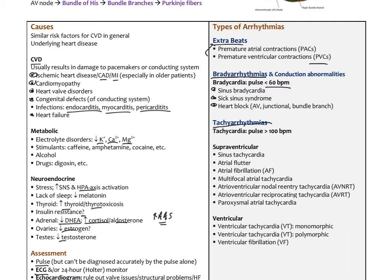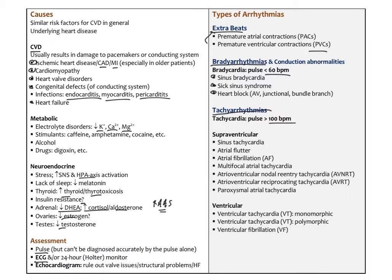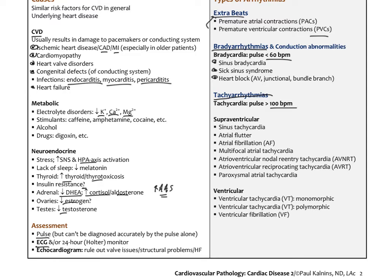There are tachyarrhythmias where the pulse is over 100 beats per minute, and they can be supraventricular — above the ventricles. This includes sinus tachycardia, atrial flutter, atrial fibrillation, multifocal atrial tachycardia, atrioventricular nodal re-entry tachycardia (AVNRT), atrioventricular reciprocating tachycardia (AVRT), and paroxysmal atrial tachycardia. These are differentiated based on presentation and ECG findings.